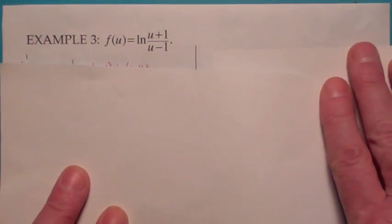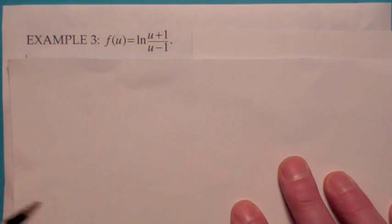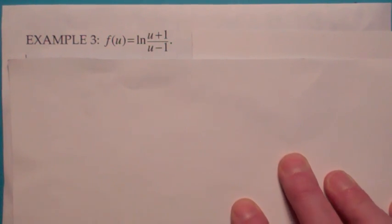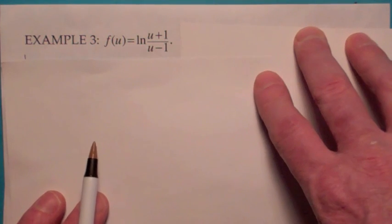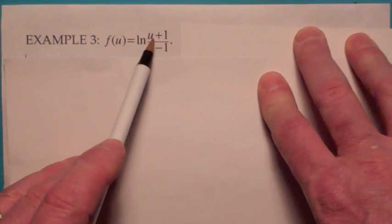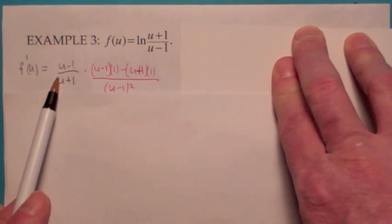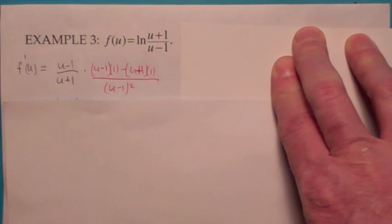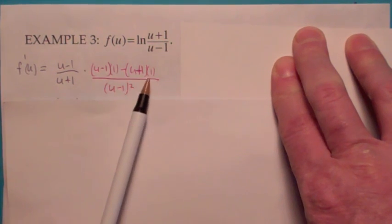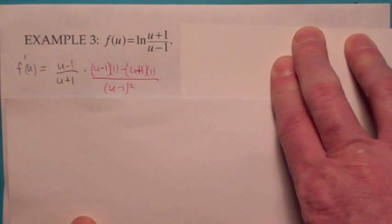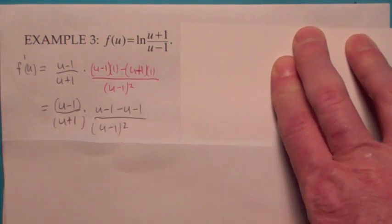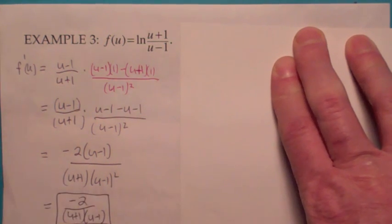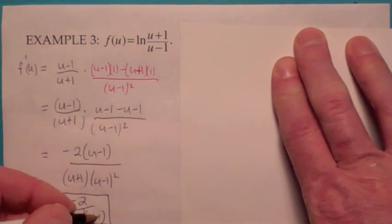Let's look at this one. This is f of u equals the natural log of u plus 1 over u minus 1. The derivative of the natural log of something is 1 over that something. When you take 1 over a fraction, you take the reciprocal of it, so you end up with u minus 1 over u plus 1. Then, when you use the chain rule and multiply it by the derivative of what's inside, you have a quotient, so you're using the quotient rule here. Bottom times the derivative of the top minus the top times the derivative of the bottom, all over the bottom squared. When you simplify the top, the u's cancel, and you end up with negative 2 times u minus 1 on top, but you also have a u minus 1 squared, so you can cancel a factor of u minus 1. Your final answer is negative 2 over u plus 1 times u minus 1.